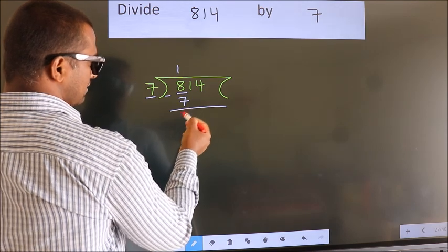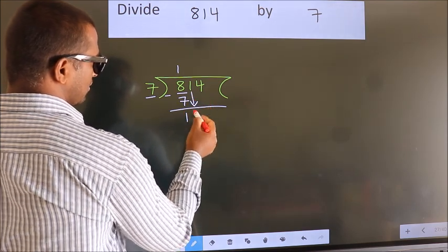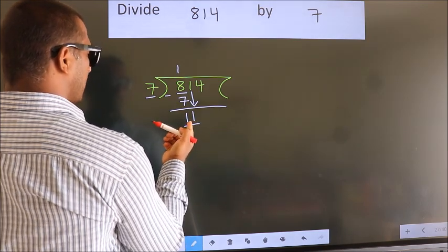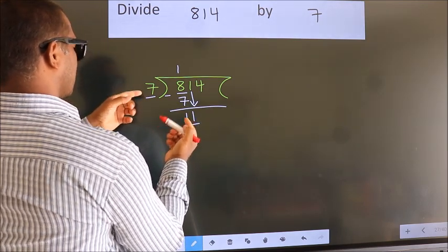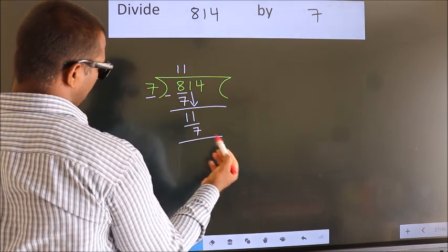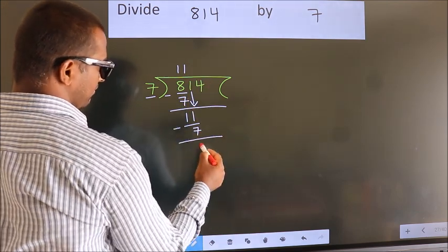After this, bring down the beside number. So 1 down. So 11. A number close to 11 in 7 table is 7 once 7. Now we subtract. We get 4.